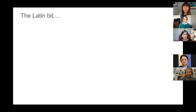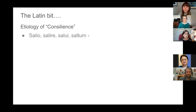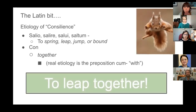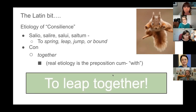Here's the Latin bit. The etymology of the term consilience comes from 'salio, salire, salui, saltum,' meaning to spring, leap, jump, or bound together. And 'con,' of course, means together. So consilience is not just 'let's work together' — it's gregarious, it's like jump in. Jump in without necessarily knowing everything is the ideology, at least for the term.